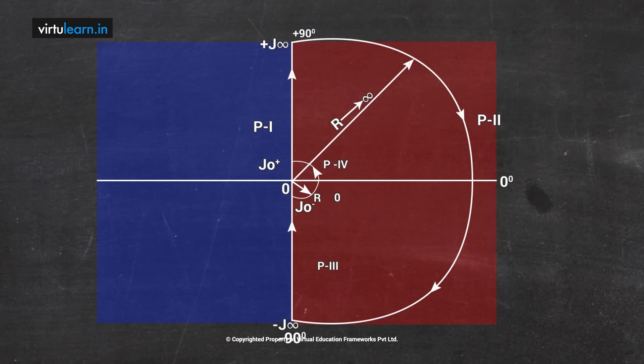If we know the number of encirclements in the q(s) plane and we know P — how many open-loop poles lie in the right-half s-plane — then we can find Z, the number of closed-loop poles in the right-half s-plane, which gives the closed-loop stability. However, in Nyquist stability we do not map from the s-plane to the q(s) plane; instead, we map from the s-plane to the G·H(s) plane.